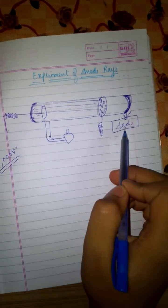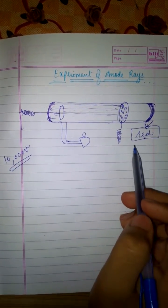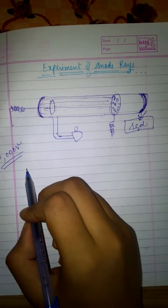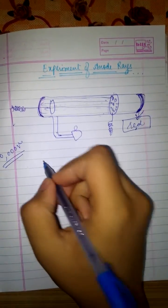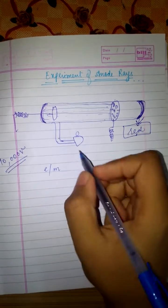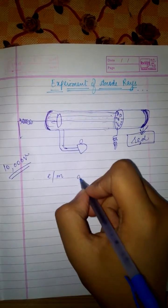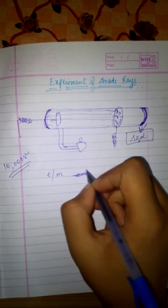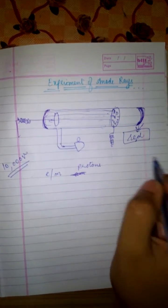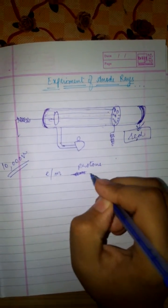From this experiment, Sir Yogan Goldstein found out that the charge by mass ratio of the protons, the positively charged particles, the particles of the anode rays, were all different. They were not at all same for each and every element.